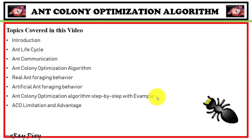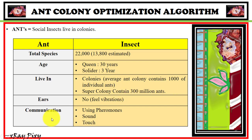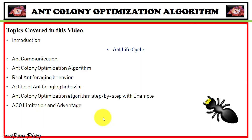We will understand this algorithm step by step with an example, and in the end we have limitations and advantages. Starting with the introduction: there are an estimated 13,800 ant species. A queen can live up to 30 years, soldiers can live up to 3 years, and they live in colonies. An average colony can contain thousands of individual ants, and a super ant colony can contain 300 million ants. They have no ears but can feel vibrations through the ground, and they communicate using hormones, sound, and touch.